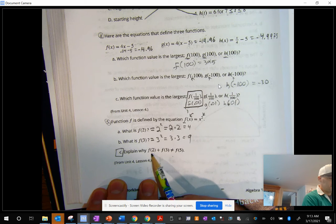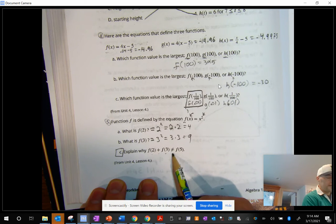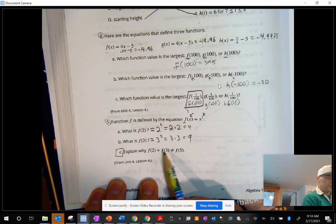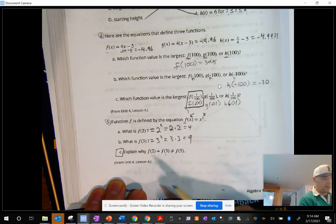Why does F of 2 plus F of 3 not equal F of 5? Because we know 2 plus 3 equals 5, but that's not what this is saying, right?